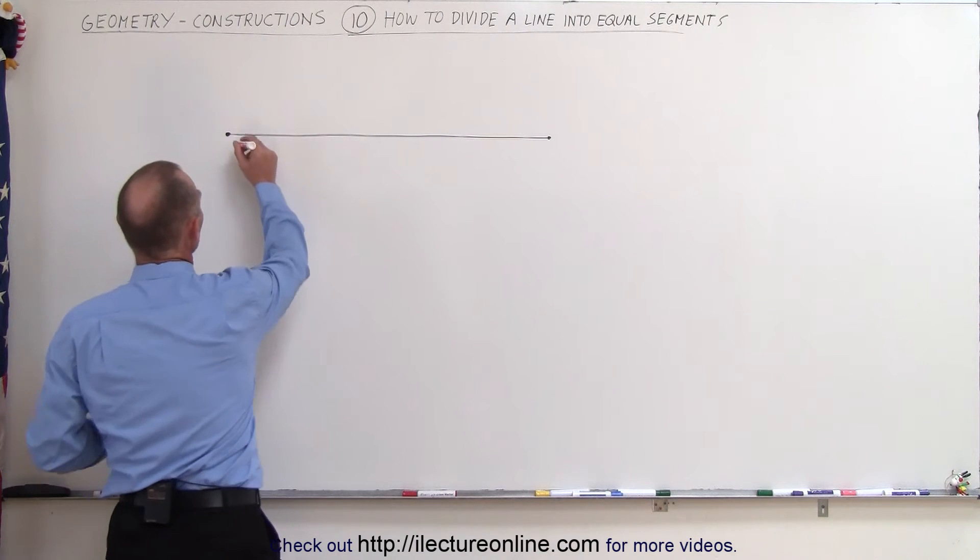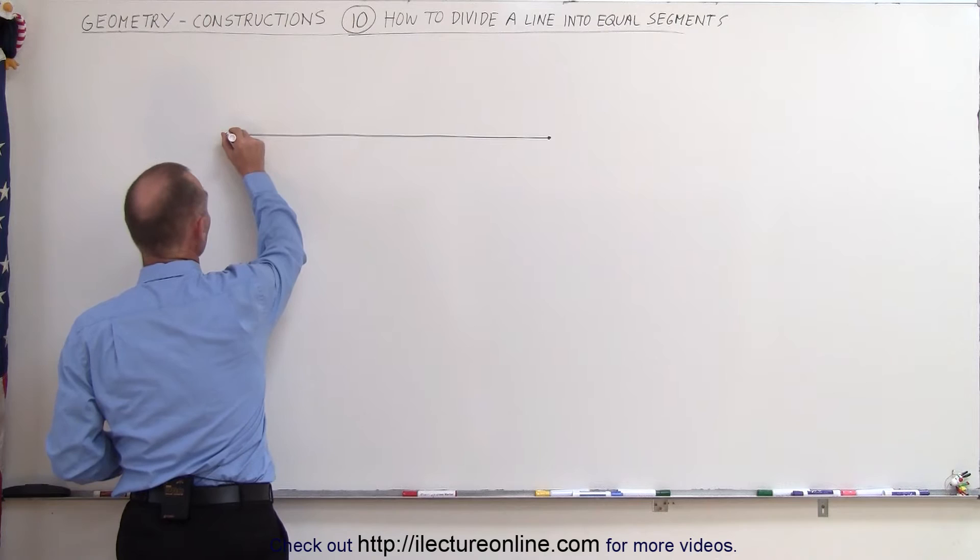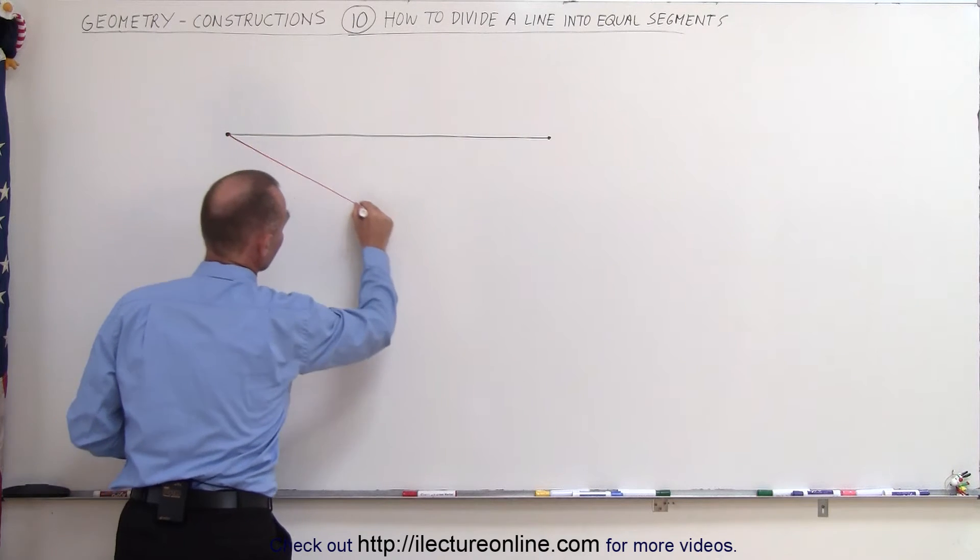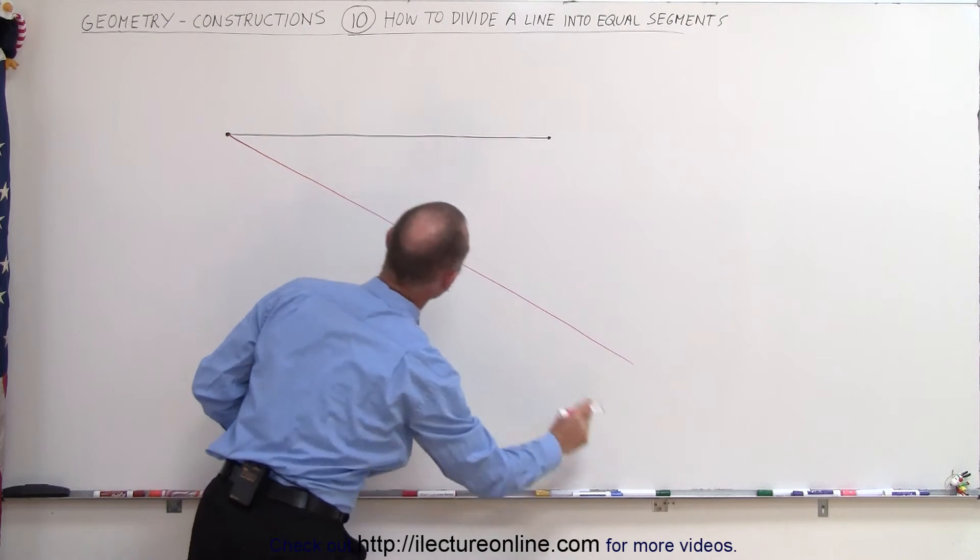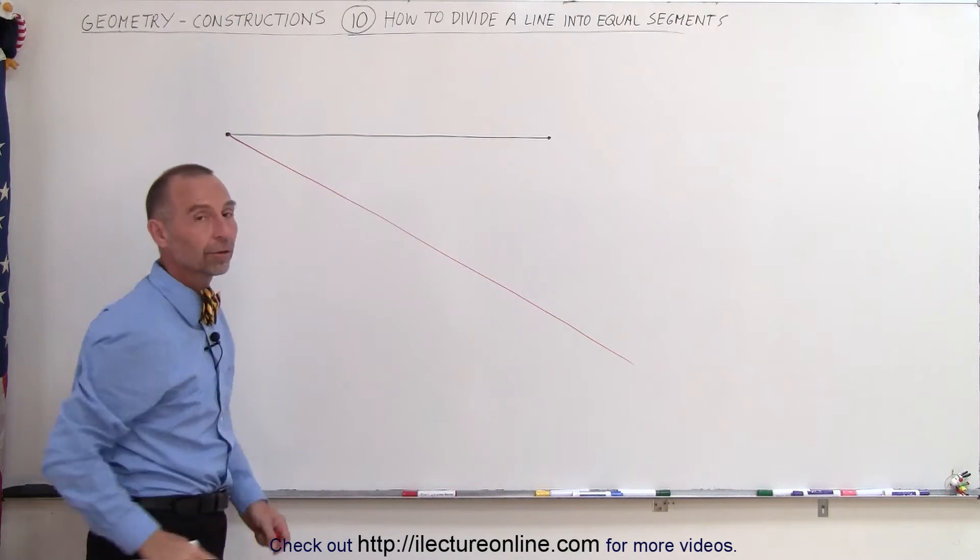To do that we draw another line, not parallel to the first line but starting on one of the points, like so, make the line a little bit longer than the first line.